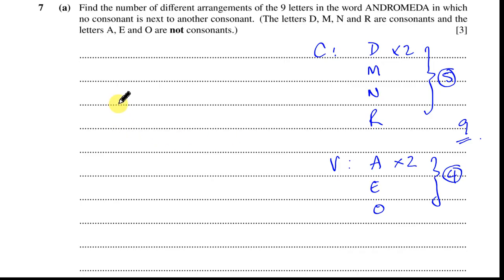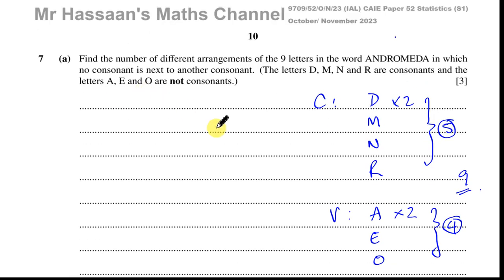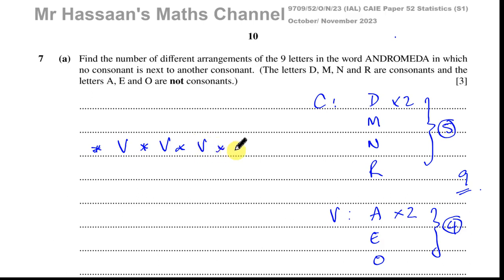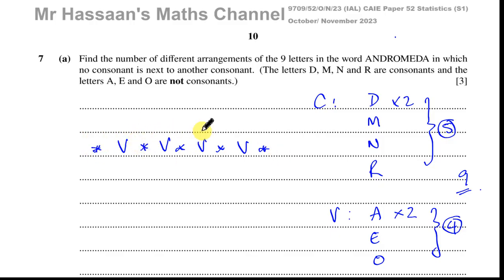When you have a question like this, what we need is for the consonants to be separated — and they will be separated by vowels. So we're going to have a vowel, then a space for a consonant, then another vowel, then a space for a consonant, and so on. With four vowels we get five spaces, so the consonants are never next to each other — they are all separated by vowels.